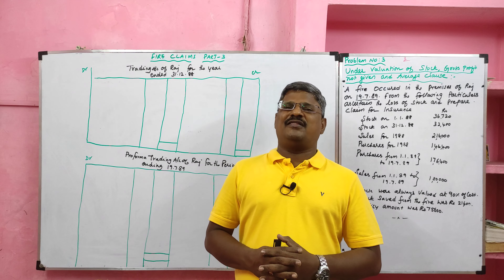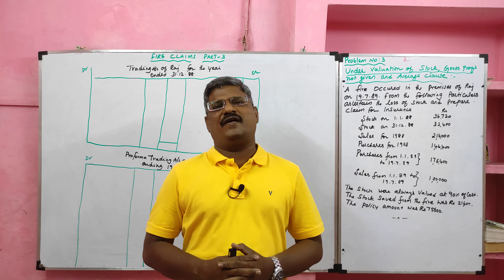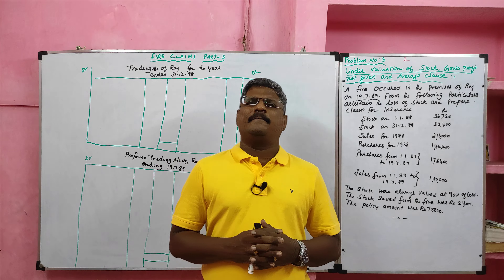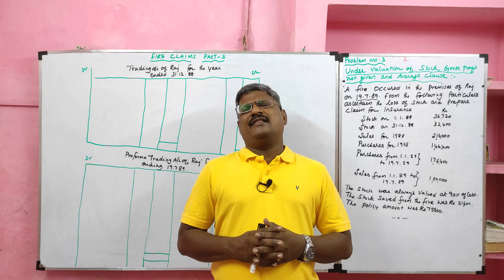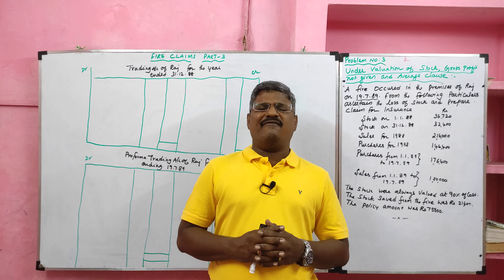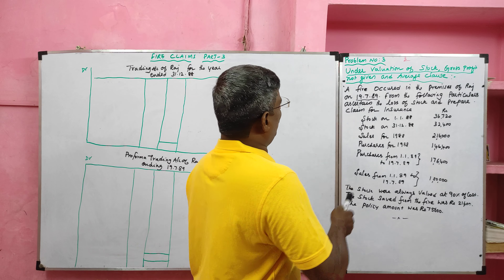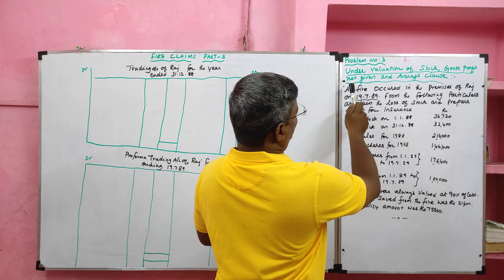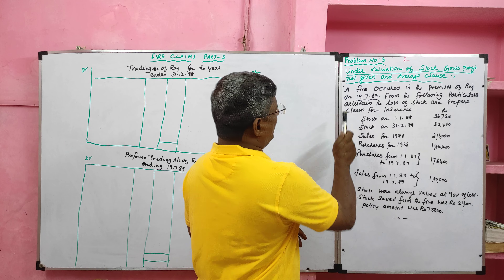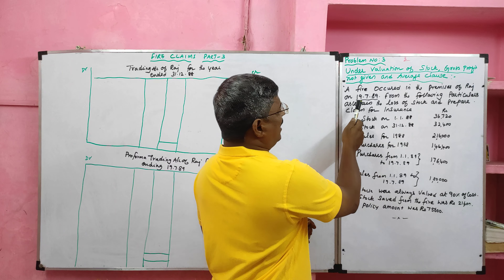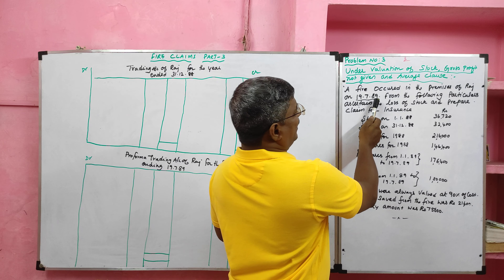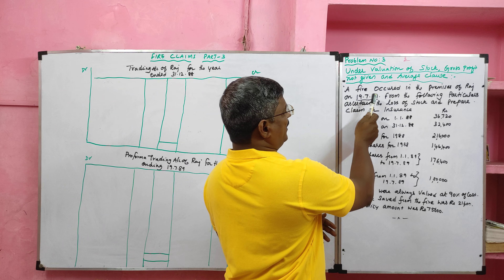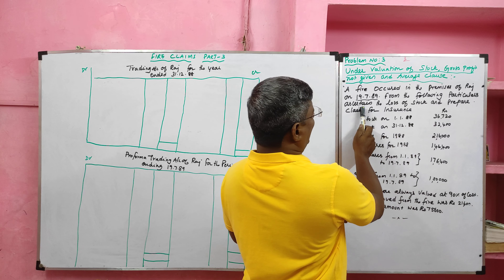Today we are going to solve the third problem in relation to fire insurance claim. In this problem, gross profit ratio is not given, and the stocks were undervalued, so the average clause will apply. Problem number three: undervaluation of stock, gross profit not given, under average clause will apply. A fire occurred in the premises of Raj on 19th July 1989, so we have to prepare a pro forma trading account till 19th July 1989.